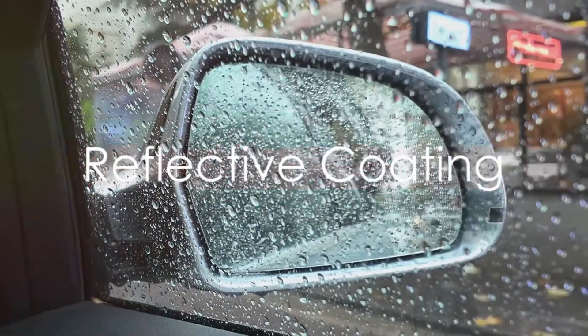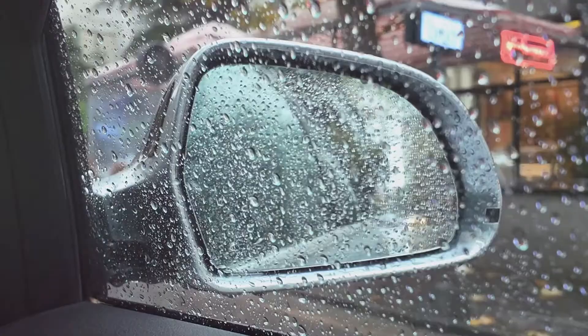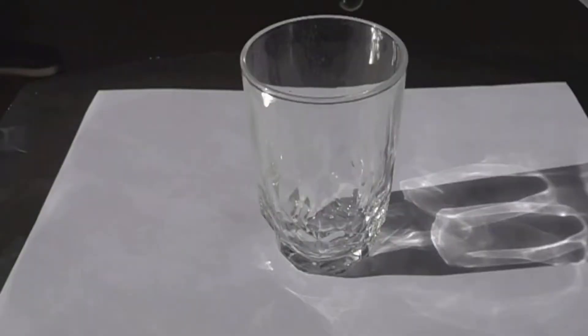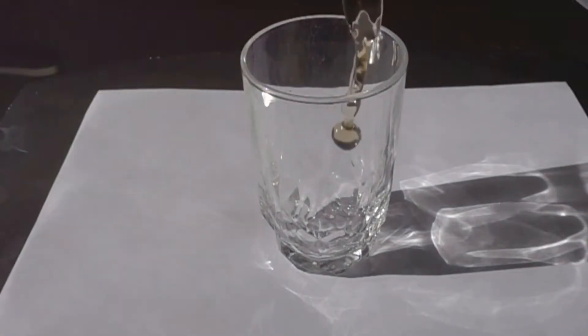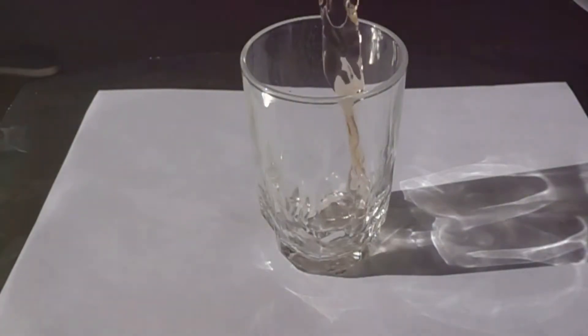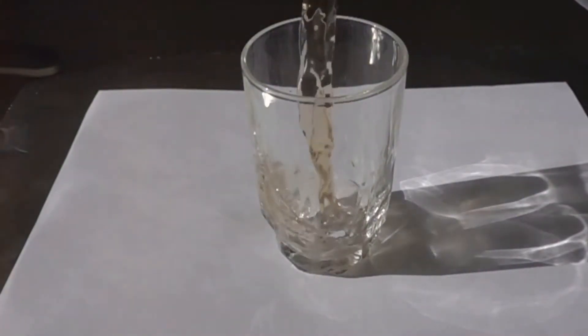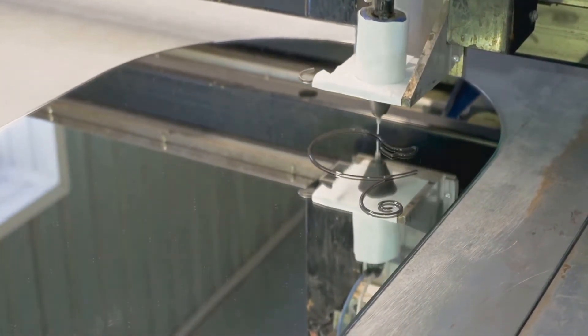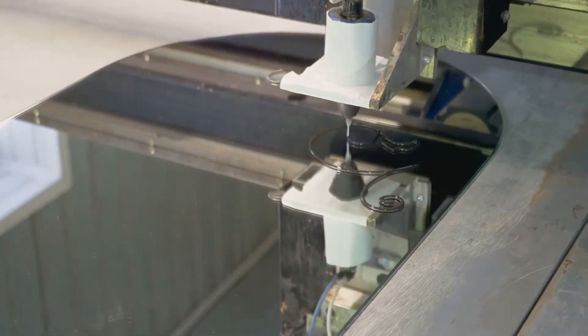The magic happens when we add the reflective coating to the glass. To start, the glass is sprayed with hot, demineralized water. This step is crucial to prevent any damage from tap water minerals. Once the glass is prepped, it's time for the tin. Liquified tin is carefully applied to the back of the glass, acting as a base for the next step: silvering.